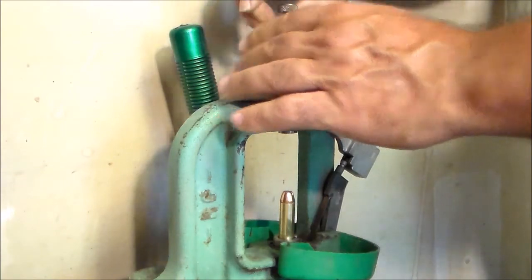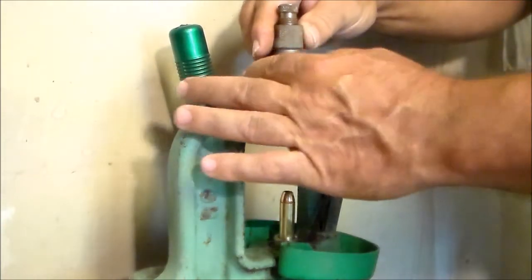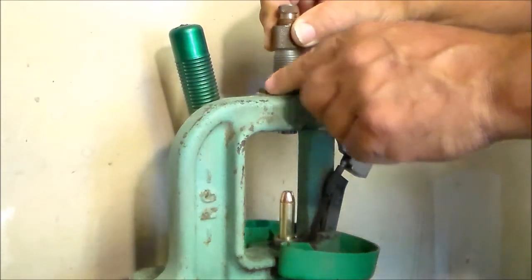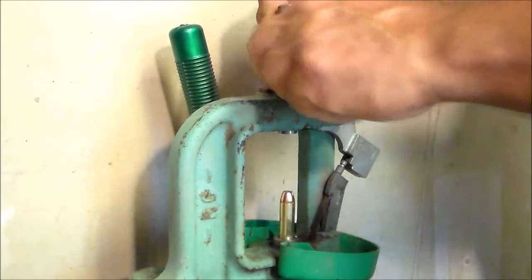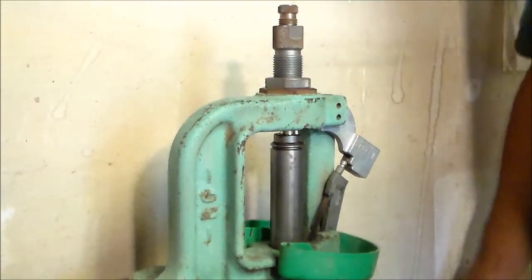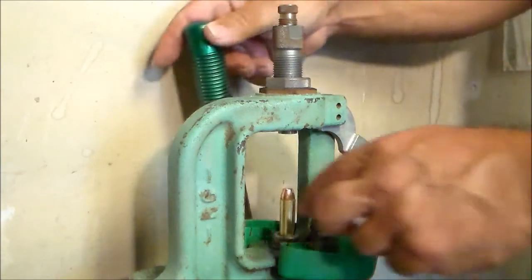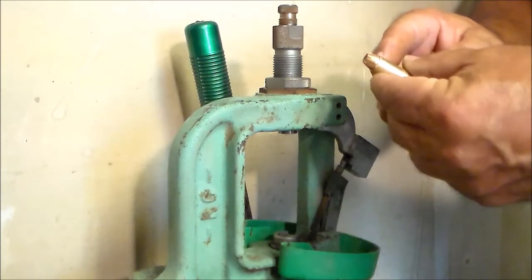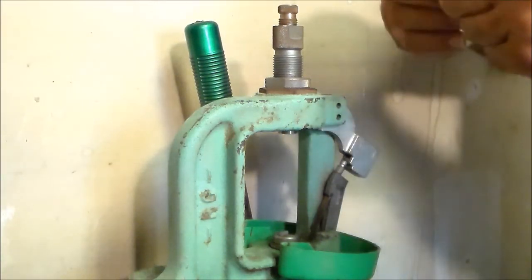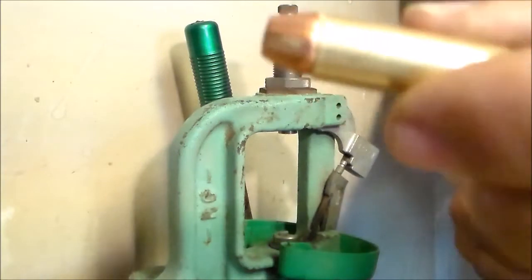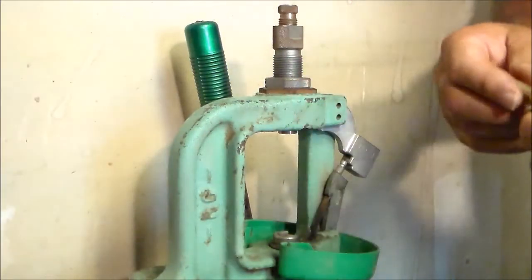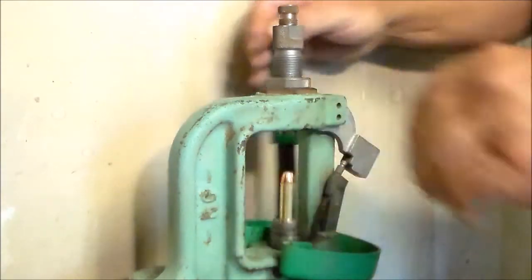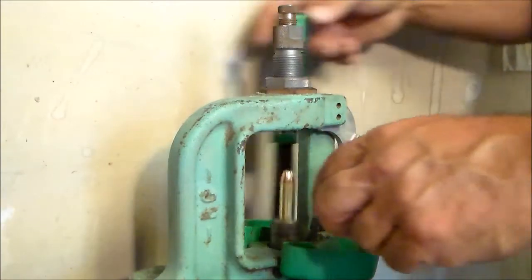Back it off a couple turns. Loosen this lock ring and run it down a quarter turn. We're trying to establish a crimp on the bullet. Run it all the way up and see if we have a crimp on the bullet. There is a slight taper crimp. I'd like a little bit more—you don't want it exaggerated—but there is a slight crimp on it right now. What I'm going to do is turn the die down another eighth of a turn, run it all the way up, and check your bullet.